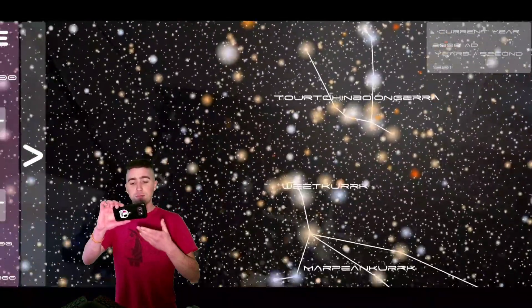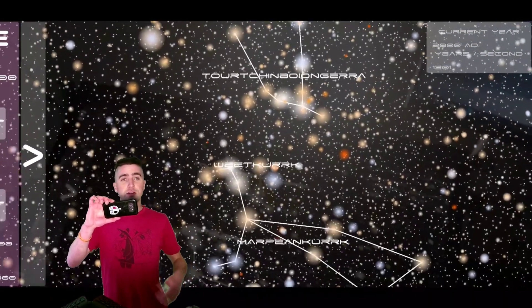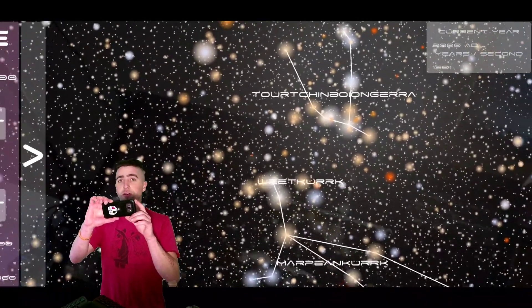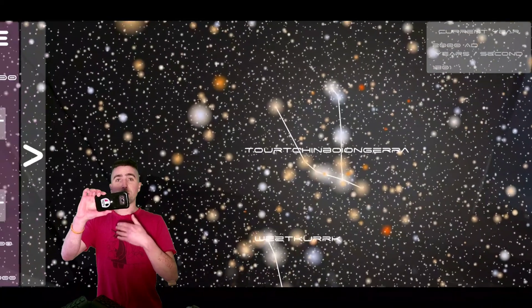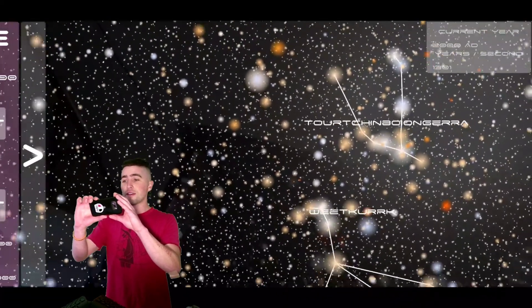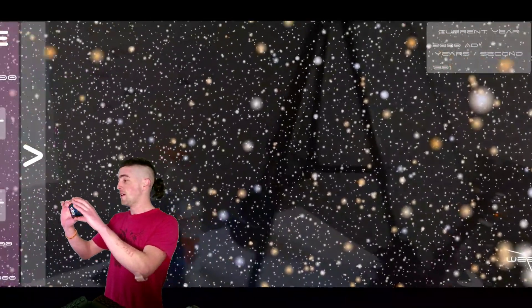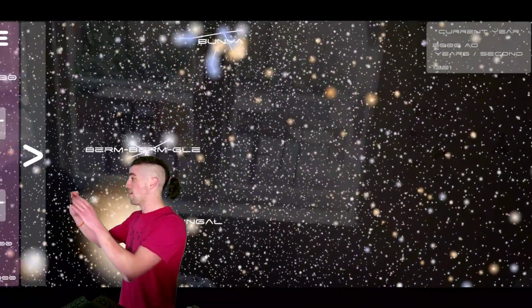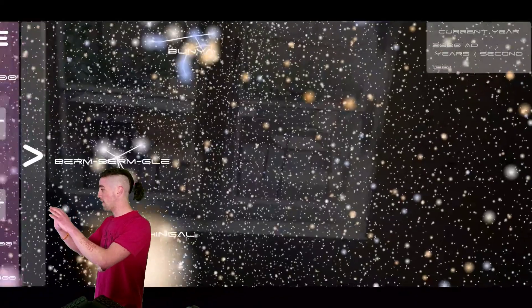And this particular constellation system, this is a Boorong constellation system. This is a Boorong tribe, is a tribe in Australia. They're very well-known stargazers. They have lots of stories for each of their constellations. And we can see some really awesome stuff in 3D.